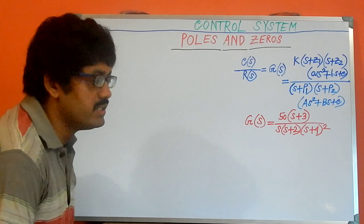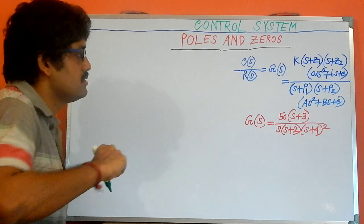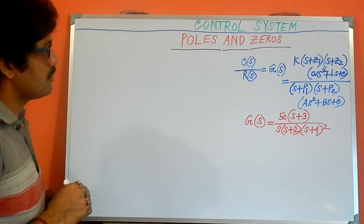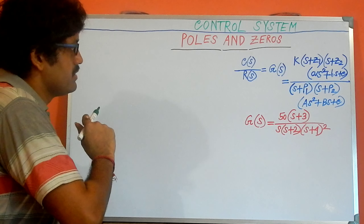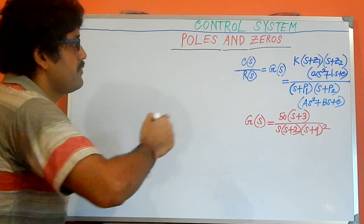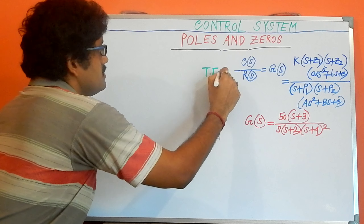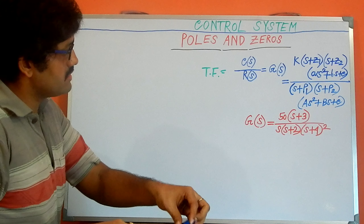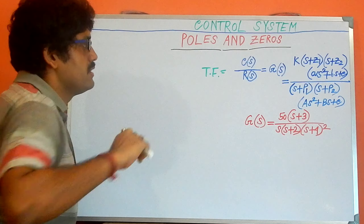In our control application, the poles and zeros are very important. So what are poles and what are zeros? If a transfer function is given, this is our transfer function C(s)/R(s), and a polynomial is given on the right-hand side.